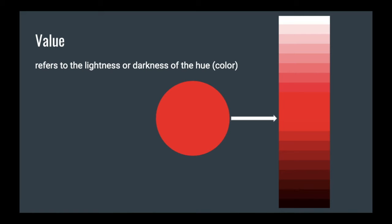So value, just like we did with the portraits, refers to the lightness or darkness of a hue or color. When we did the portraits, we were just doing pencil, so we just did grayscale. And now, since we're going to be painting these, we're going to be using the word value in terms of color and paint.